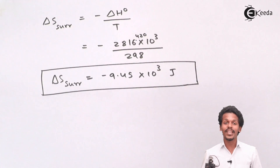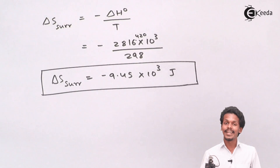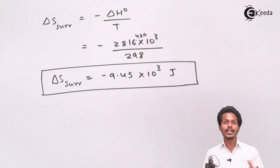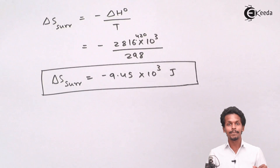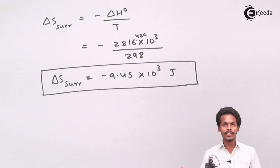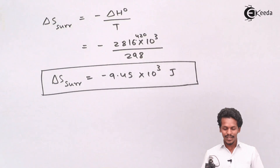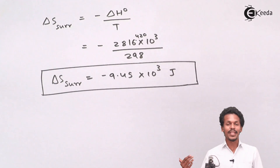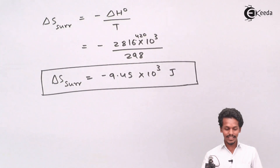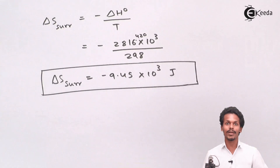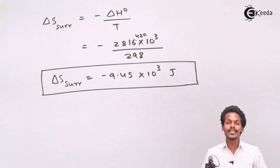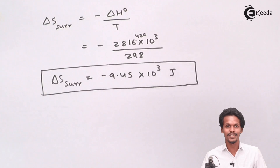So this is how we determined the value of delta S surrounding using the standard enthalpy and standard entropy values provided. It was quite straightforward. Thank you friends for watching — I hope you liked the video. Please share it and don't forget to subscribe.